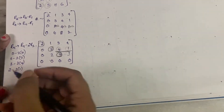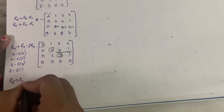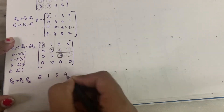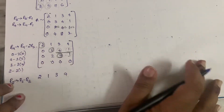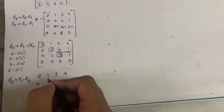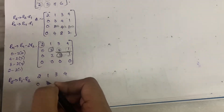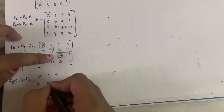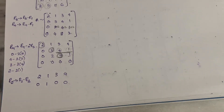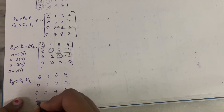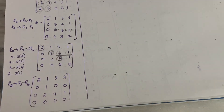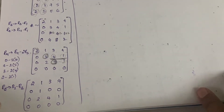To make row 2 a zero row, we perform R2 becomes R2 minus R3. After this operation the second row becomes all zeros: 0, 0, 0, 0.